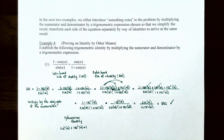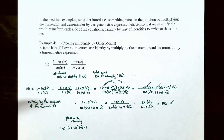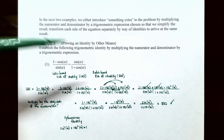In the next two examples, we introduce multiplying the numerator and denominator by a trigonometric expression chosen to simplify the result — multiplying by 1 in a creative way — and then transform each side of the equation separately using identities to arrive at the same result. Example 4: proving an identity by other means. Establish the following identity by multiplying numerator and denominator by a trigonometric expression. For number 1, the left side is (1 − cos α) / sin α = sin α / (1 + cos α).